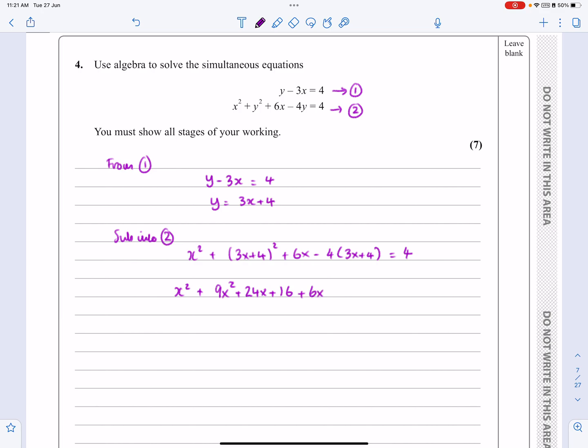So x² + 9x² + 24x + 16 + 6x - 12x - 16 = 4. Be careful with this next bit - it's minus 4 times (3x + 4), so minus 12x and minus 16. If you've made a mistake, check that you did minus 4 times 4 and didn't end up with a plus.